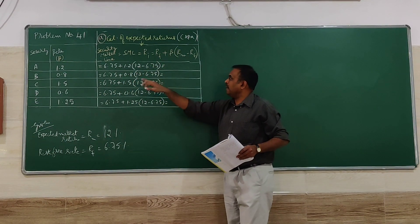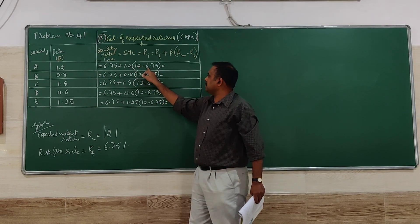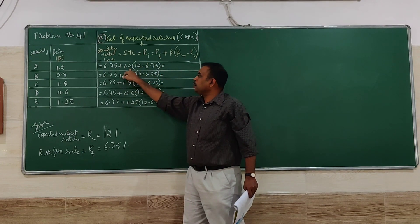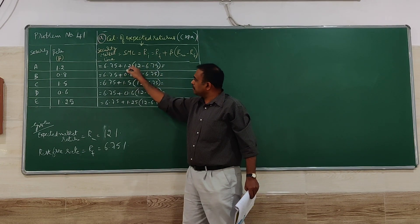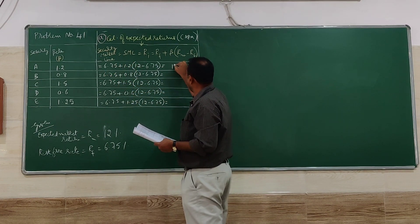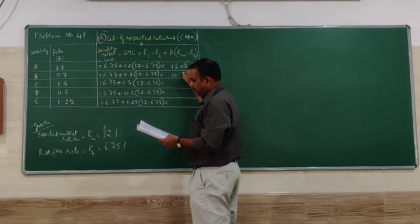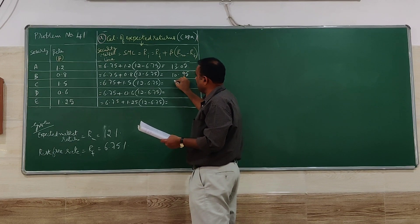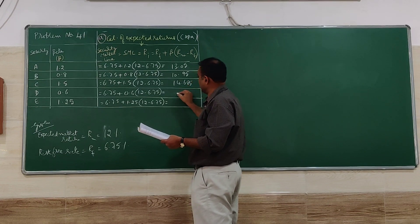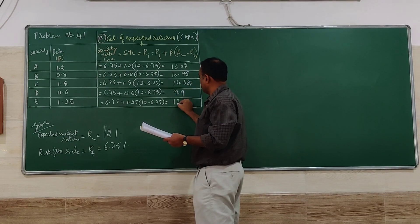I have substituted here. With simplification, we have to be very careful. 12 minus 6.75 gives us 5.25 into 1.2, then add that value to 6.75. We get 13.05, 3.95 for B 14.685, for C 9.9, for D 13.312, for E.